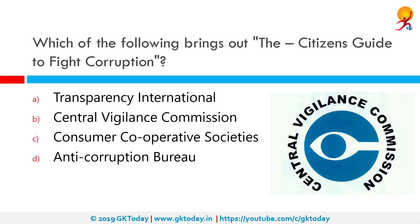Which of the following brings out The Citizen's Guide to Fight Corruption? The correct answer is the Central Vigilance Commission. The Central Vigilance Commission is an apex Indian governmental body created in 1964 to address governmental corruption. In 2003, the parliament enacted a law conferring statutory status on the CVC.